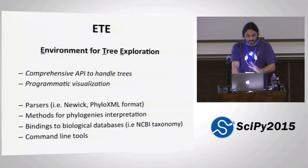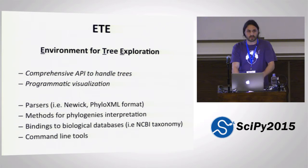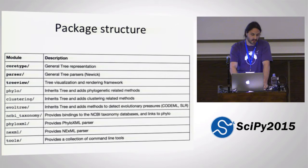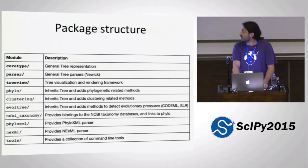There are some methods for phylogenetic analysis — very specific analysis and bindings to databases like the NCBI taxonomy database, which is currently one of the main references for all the species being characterized. It also provides some command line tools for some of the most common analyses that we need to run. The structure of the package is very modular. The core functionality, which provides basic tree functionality, is isolated in the core type module of ETE. Then you have parser and tree view, which are two other core parts of the package, providing tree visualization and some basic parsers.